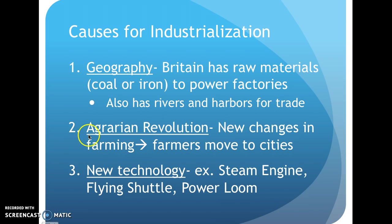Our second cause is the agrarian revolution. When we see the word agrarian, it means agriculture or farming. We have new changes in farming such as the enclosure movement, where we enclose off large farm fields and small farmers lose their jobs. Or we have the seed plow, where many farmers aren't needed to plow fields anymore. The new technology for farming makes these farmers lose jobs, so they move to the city where we can have an industrialized city center.